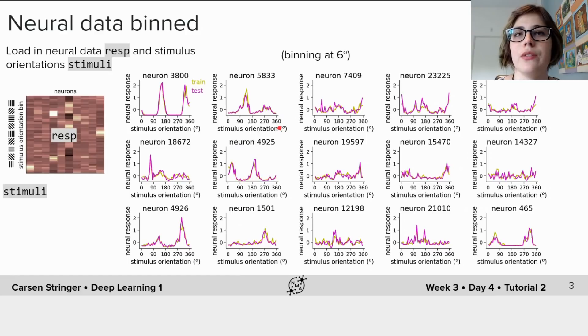So let's look at some of this neural data. In this case before binning we split the stimuli into two sets, a training set and a test set. Then we bin the stimuli in bins of six degrees and average the responses within that bin for each given neuron.